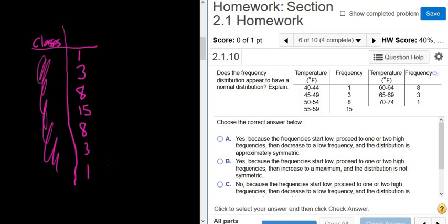So a frequency table or a frequency distribution is said to be normal if the frequency starts small, gets big, and then gets small again, and if it's roughly balanced on both sides. In other words, you want a nice bell shape, right? Something like this, a nice little bell shape.